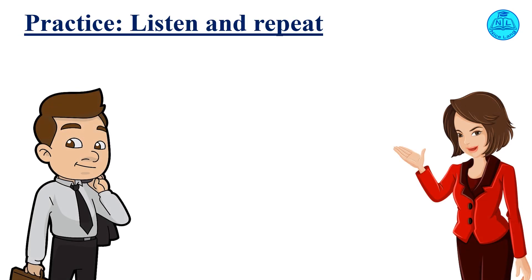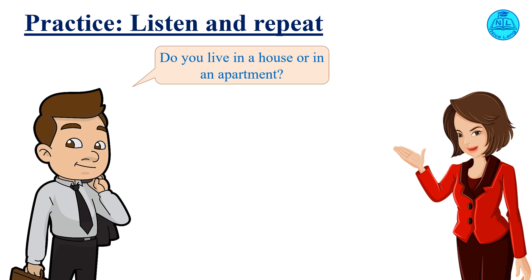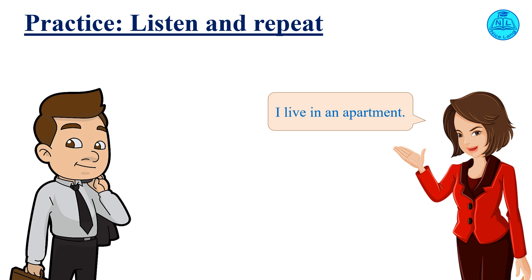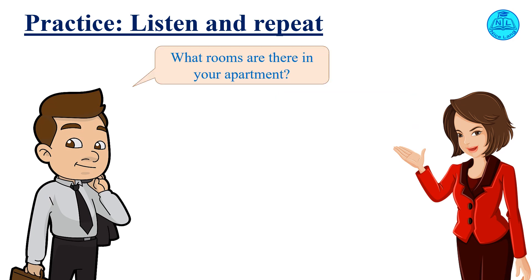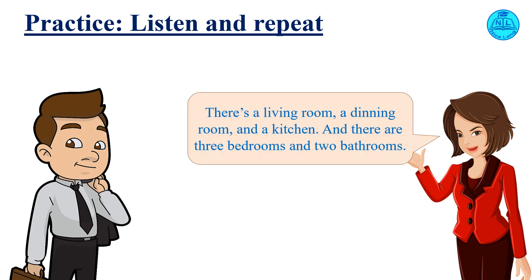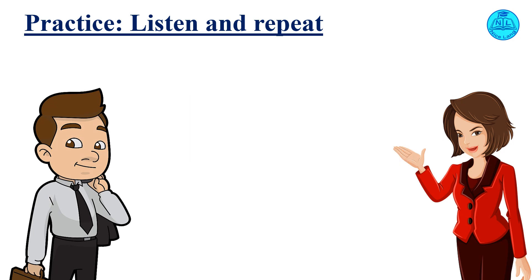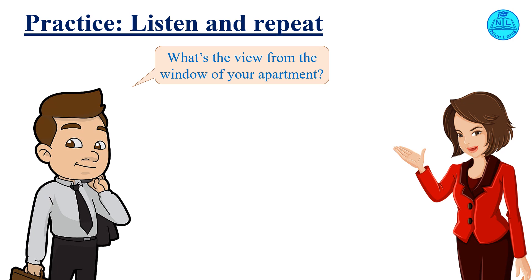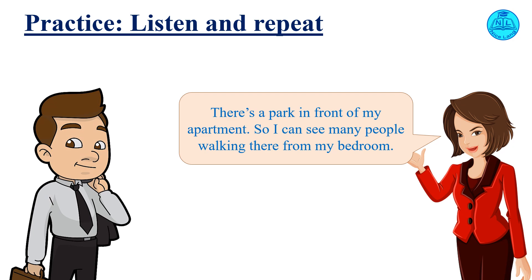Listen and repeat. Do you live in a house or in an apartment? I live in an apartment. What rooms are there in your apartment? There's a living room, a dining room, and a kitchen. And there are three bedrooms and two bathrooms. What's the view from the window of your apartment? There's a park in front of my apartment, so I can see many people walking there from my bedroom.